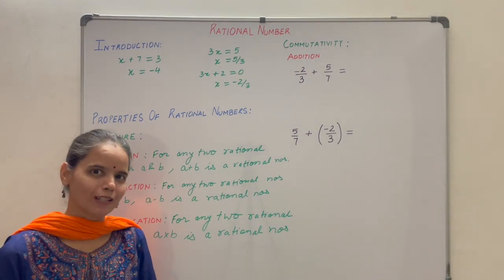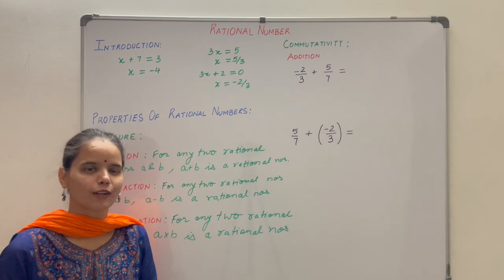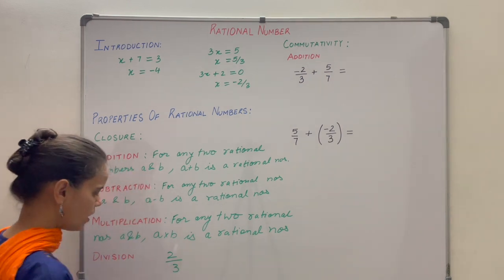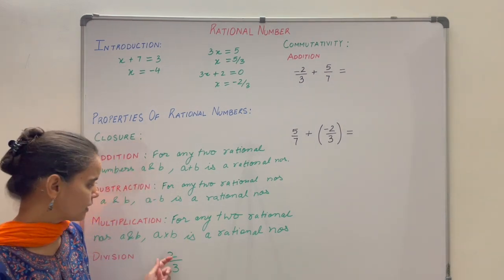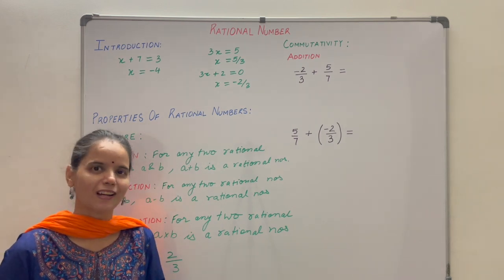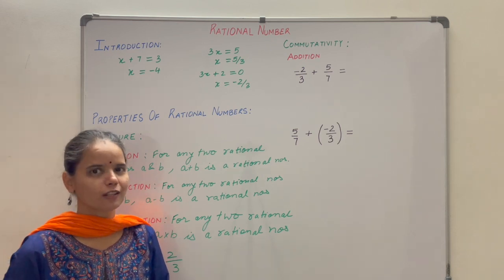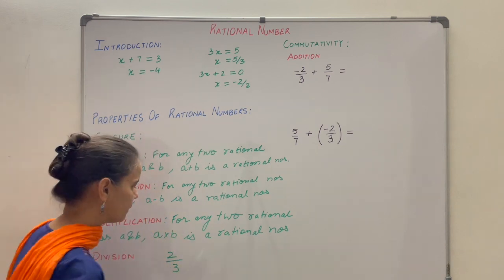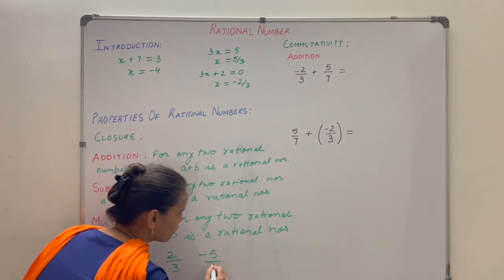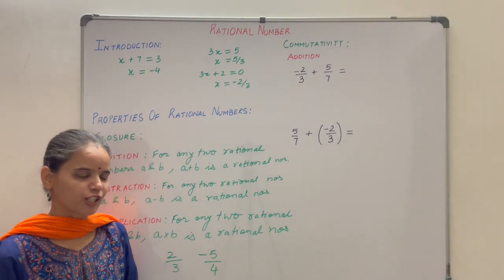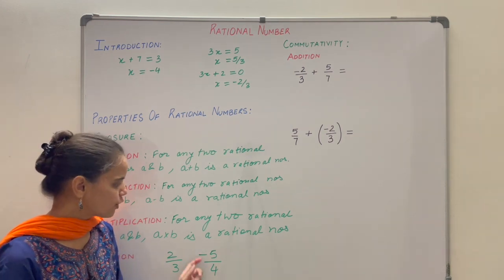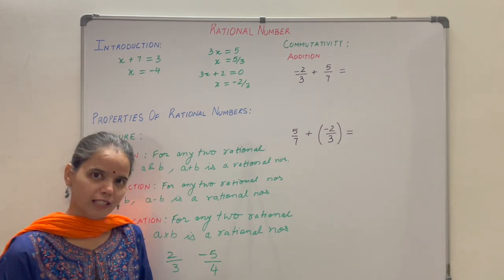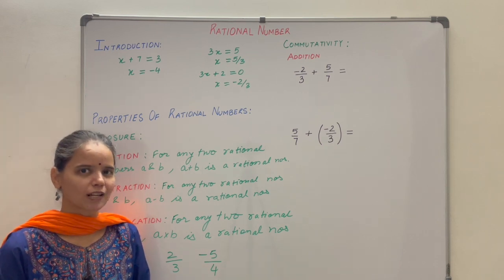Division. Whole numbers are not closed under division. For example, 2 divided by 3 gives 2 by 3, which is not a whole number. Even integers are not closed under division — for example, minus 5 divided by 4 gives minus 5 by 4, which is not an integer. So integers are not closed under division.